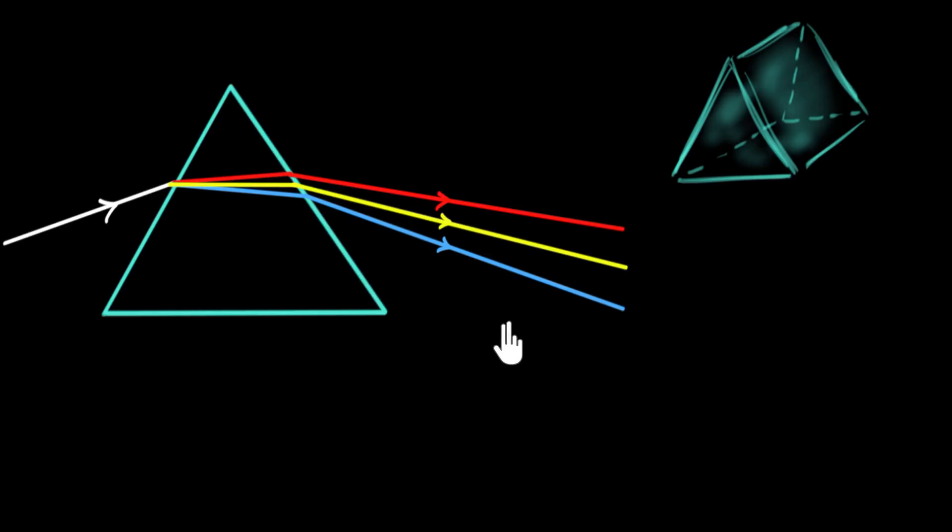And so the popular opinion back then was pretty much that white light is just white light. I mean, why would you assume it's made up of seven colors? It's just like any other color. White is a single color. And when it passes through the prism, the prism paints that white color into different other colors like red and green and blue and yellow and everything. So the prism is creating the colors. That was the popular opinion back then. That's what people actually concluded that the prism creates colors.